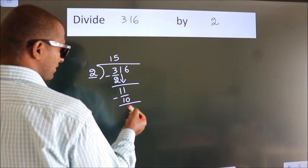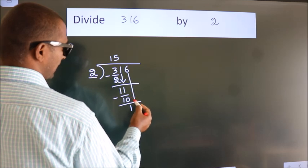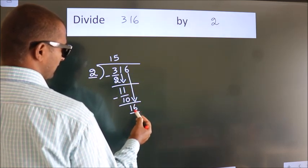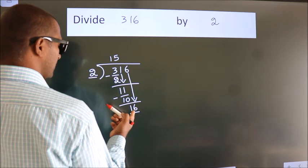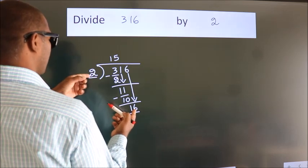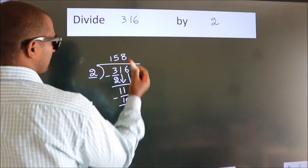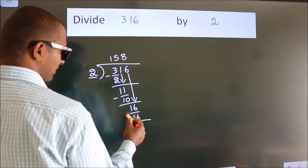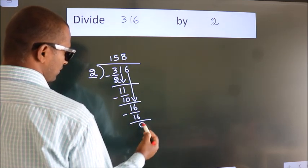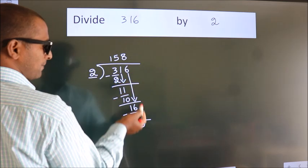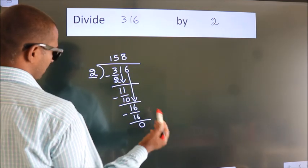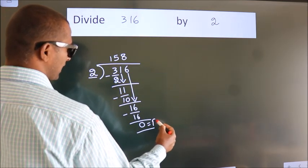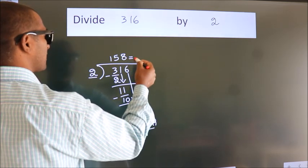After this, bring down the beside number. So, 6 down — so, 16. In the 2 times table, 2 eights 16. Now we subtract. We get 0. No more numbers to bring down, so we stop here. This is our remainder. This is our quotient.